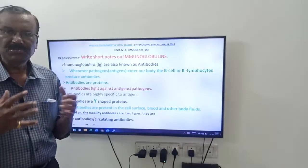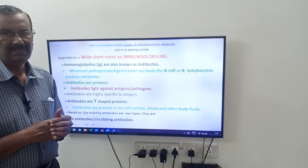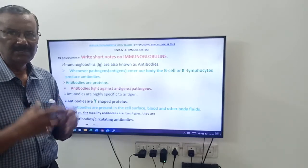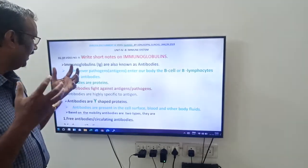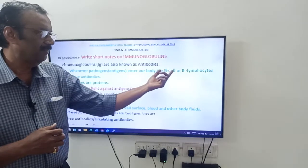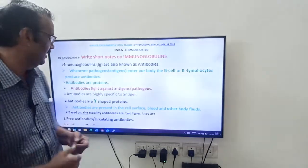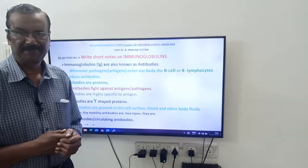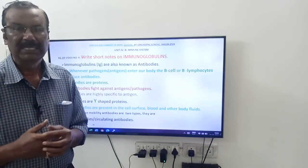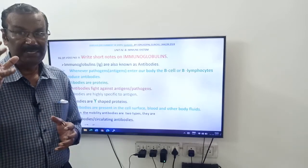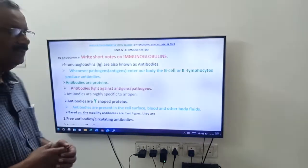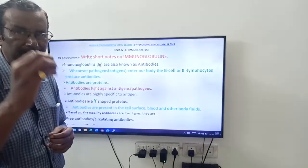Whenever a pathogen or antigen — a foreign particle to our body — enters into our body, B cells, or B lymphocytes, produce antibodies. Antibodies are produced by B lymphocytes or B cells.